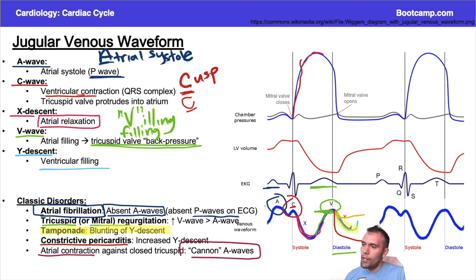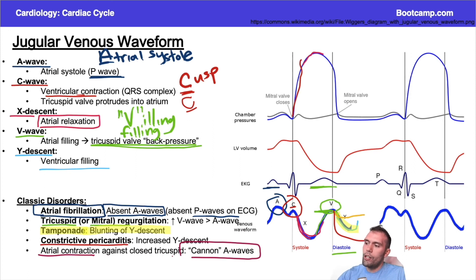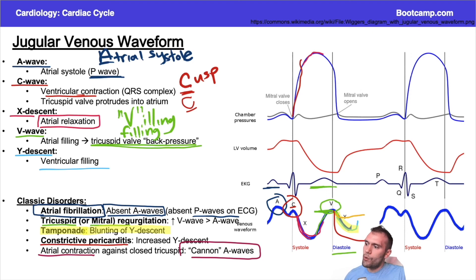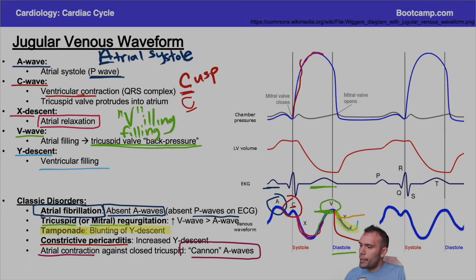Cannon A waves occur when the atria contracts during the A wave phase against a closed tricuspid valve. Pushing blood against a closed valve generates very high recoil pressures, producing tall, prominent A waves. This happens when the atria contracts too early — such as in premature atrial contractions — or in third-degree AV block, where the atria and ventricles contract independently and the tricuspid valve may be closed at the time of atrial contraction.